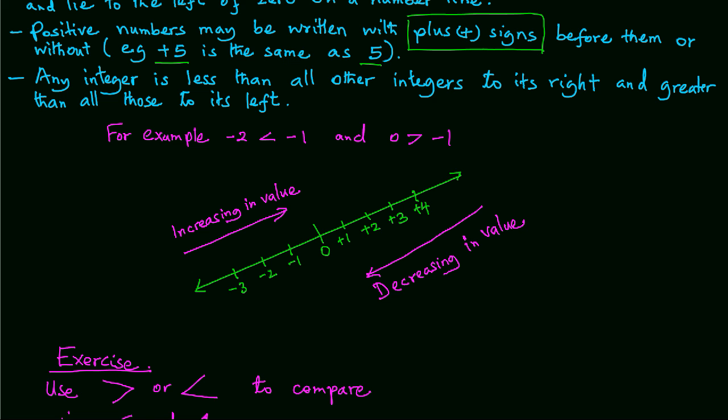We have increasing value and decreasing value. In this sloppy manner, the numbers increase as the number line goes up and they decrease as the number line goes down.